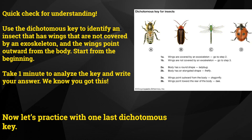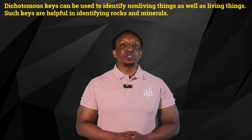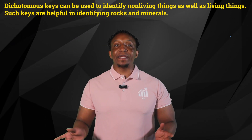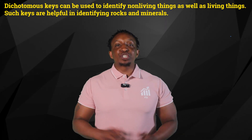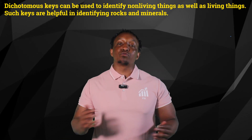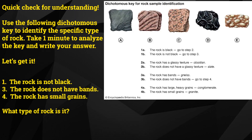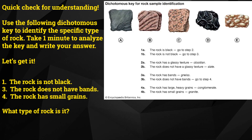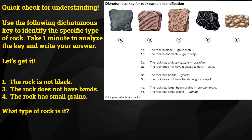Now let's practice with one last dichotomous key. Dichotomous keys can be used to identify non-living things as well as living things. Such keys are helpful in identifying rocks and minerals. Quick check for understanding: use the following dichotomous key to identify the specific type of rock. Take one minute to analyze the key and write your answer. Let's get it.